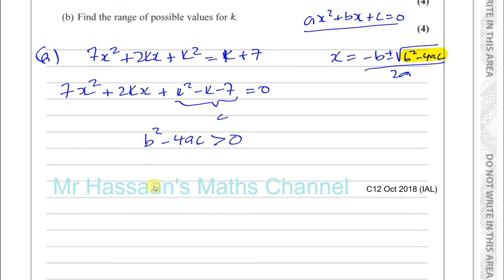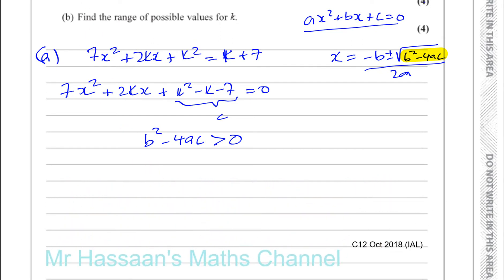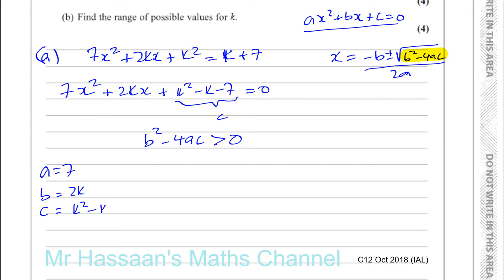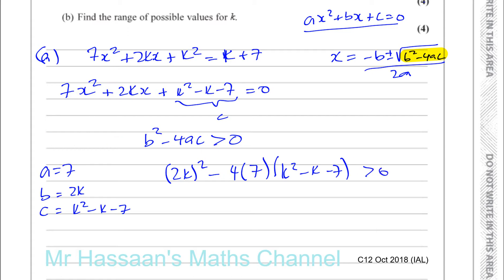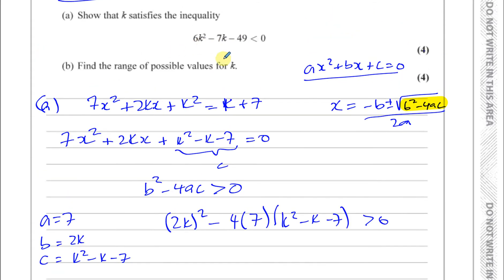We identify a = 7, b = 2k (the coefficient of x), and c = k² - k - 7 (the constant). So b² - 4ac becomes (2k)² - 4 × 7 × (k² - k - 7), and this must be greater than 0. Let's expand and hope we end up with the required inequality.